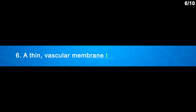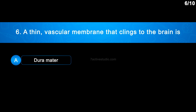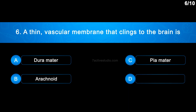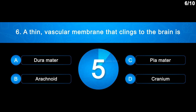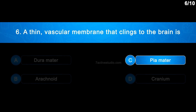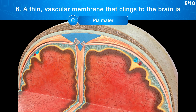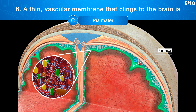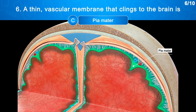Question No. 6: A thin vascular membrane that clings to the brain is — Option A: Dura mater; Option B: Arachnoid; Option C: Pia mater; Option D: Cranium. The correct answer is Option C: Pia mater. The word pia mater literally means sensitive matter, and it is made up of delicate connective tissue and contains numerous tiny blood vessels. The pia mater is the only layer that clings to the brain and follows its convolutions.